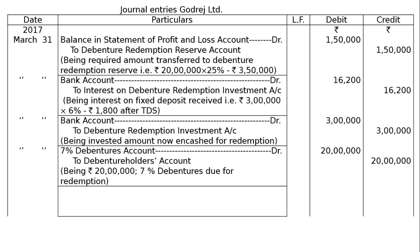Next entry: 7% debentures account debited Rs 20,00,000 to debenture holders account, Rs 20,00,000. Being Rs 20,00,000 in 7% debentures due for redemption. It is due for redemption at par.